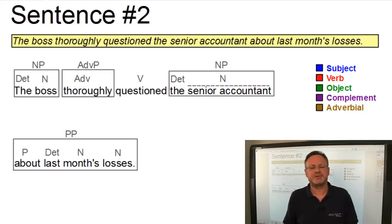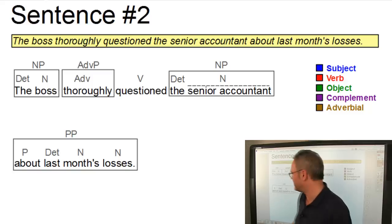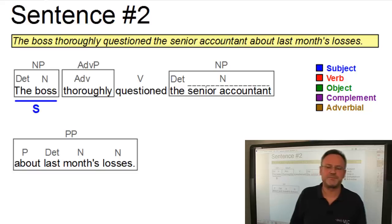Since we have a simple declarative sentence here, we only have one subject. The subject is the boss. A suitable test is the substitution test, where we can replace the boss by a pronoun. He.